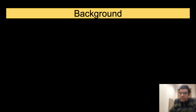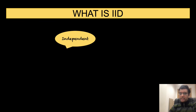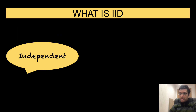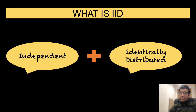To answer the questions, we need to understand a little background. Let us try to understand what it means by IID. IID is an acronym for independent and identically distributed. Let us try to develop an intuitive understanding of what it means by independence and identically distributed.